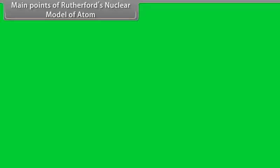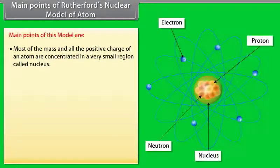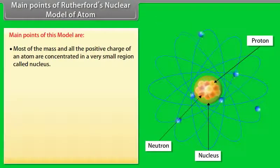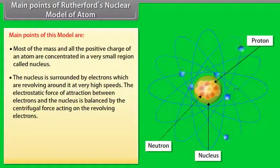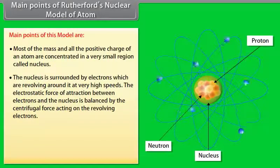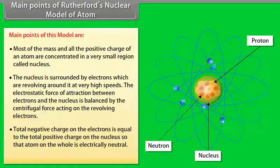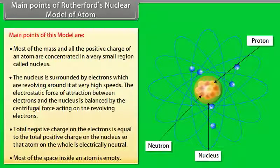Main points of Rutherford's nuclear model: (1) Most of the mass and all the positive charge are concentrated in a very small region called the nucleus. (2) Electrons revolve around the nucleus at very high speeds; electrostatic attraction between electrons and nucleus is balanced by centrifugal force. (3) Total negative charge on electrons equals total positive charge on the nucleus, so the atom is electrically neutral. (4) Most of the space inside an atom is empty.